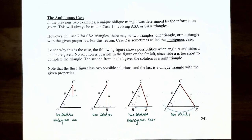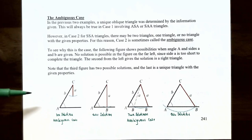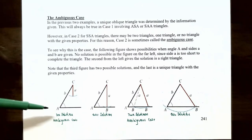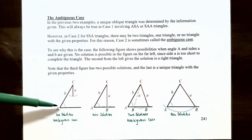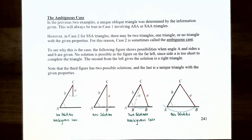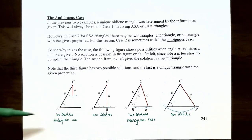The following figure shows the possibilities when angle A and sides A and B are given. No solution is possible in the figure on the far left, since side A is too short to complete the triangle. You have angle A and sides A and B given, but the length of side A is too short to actually complete the triangle, so you have the ambiguous case where there is no solution — no triangle can be formed with the given information.